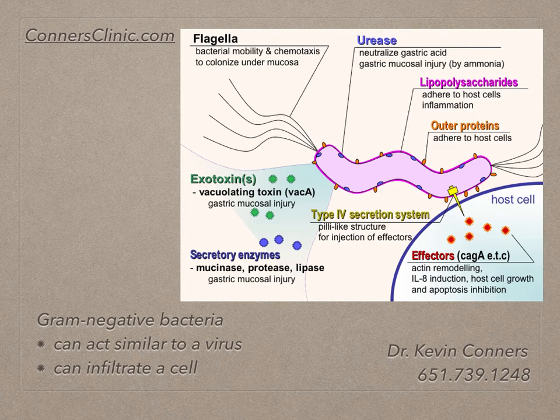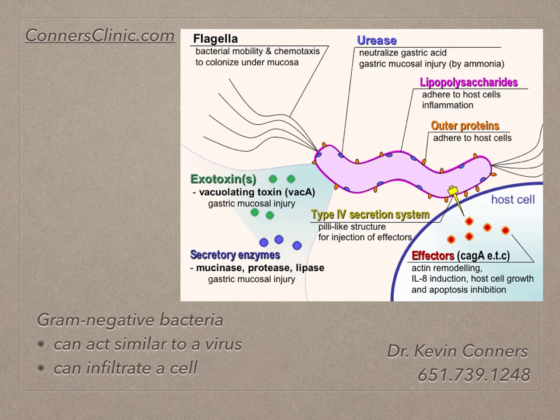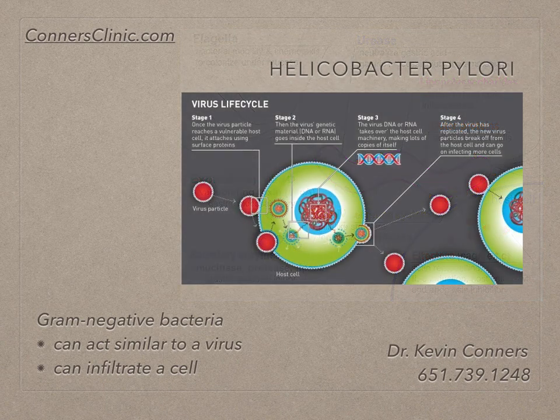The other thing with cancer and H. pylori is that it reduces the cell's ability to go through apoptosis. If you haven't listened to my series on apoptosis, I'll challenge you to do that. Apoptosis is the normal programmed cell death mechanism that is broken in every cancer patient. In order for you to have cancer, you have to have a broken apoptotic cycle — it has to have started with at least one cell.